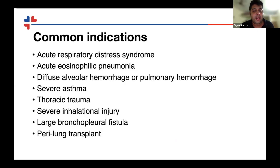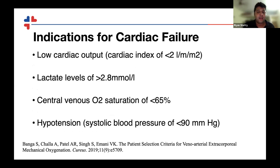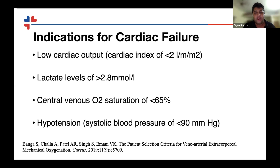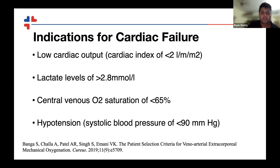Common indications in adults for respiratory ECMO include ARDS, eosinophilic pneumonia, severe asthma, diffuse alveolar hemorrhage, thoracic trauma with lung contusion, severe inhalation injuries, large bronchopleural fistula, and peri-lung transplant. For cardiac failure, there are not many clear papers, but from our unit doing about 140 ECMOs per year, we look for signs of low cardiac output: lactate greater than 2.8, central venous oxygen saturation less than 65%, systolic BP less than 90 mmHg, and — importantly — if the team believes the patient has a high likelihood of sudden cardiac arrest.